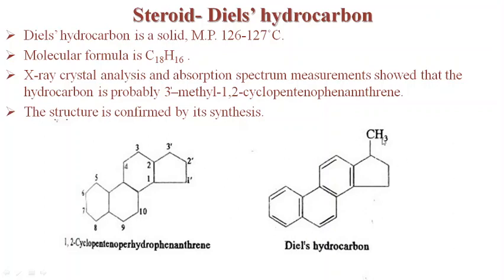At the third position there is a methyl group — 3'-methyl-1,2-cyclopenteno. This indicates the fusion of the cyclopentene ring, marked at positions 1,2. So 1,2-cyclopentenophenanthrene. The position of the methyl group is at the 3' position, the fusion point of the cyclopentene ring is 1,2, and the nucleus is phenanthrene. The structure is confirmed by synthesis.